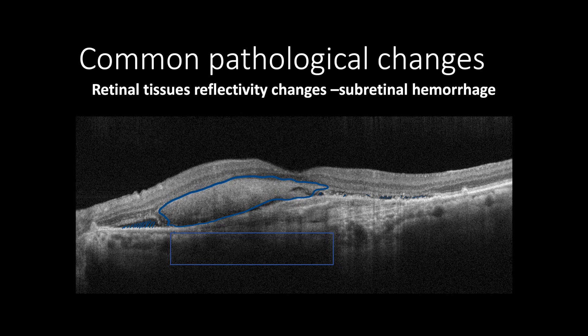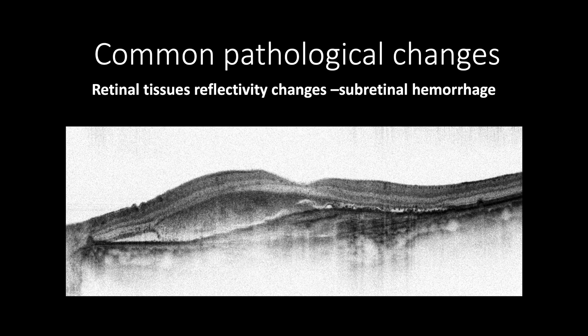This cross-section shows fibrovascular pigment epithelial detachment which has more heterogeneous hyperreflectivity. This is more appreciated using negative black and white mode, as the subretinal hemorrhage appears as a more homogeneous black color with smooth regular borders than the contents of the fibrovascular pigment epithelial detachment, which appears as heterogeneous black color due to fibrovascular components.